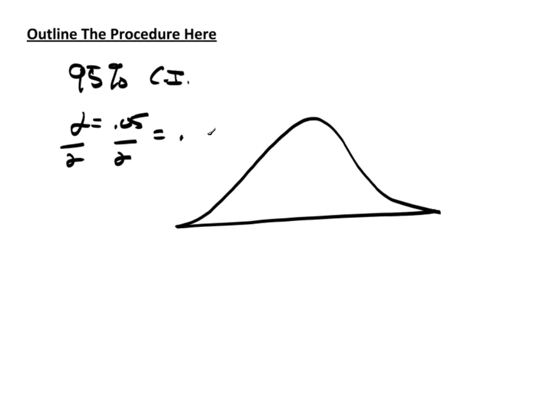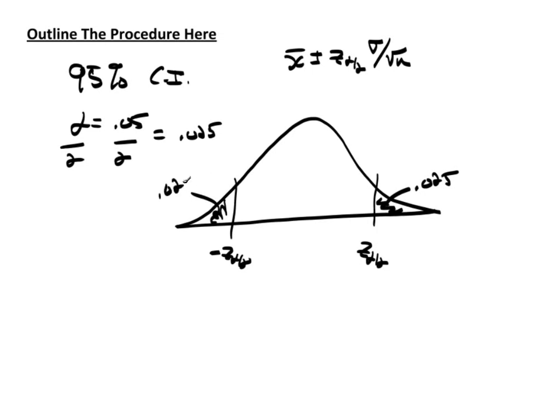If you remember right, we found the value of Z of alpha over 2 that gives us this probability .025 in the tail. And then, by adding and subtracting—because remember the confidence interval looked like x bar plus or minus Z of alpha over 2 sigma over the square root of n—this plus and minus gave me this negative of Z of alpha over 2, which also gave me .025 in this tail.